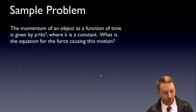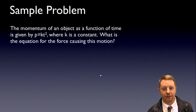Let's take a look at a sample problem. The momentum of an object as a function of time is given by p equals kt squared, where k is some constant. What is the equation for the force causing this motion?